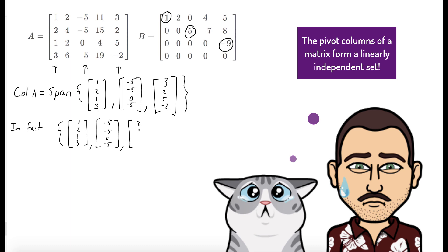So if we weren't given B, we would have to first row reduce A into echelon form to find its pivot columns.